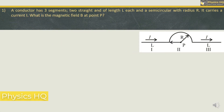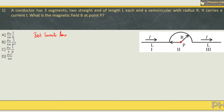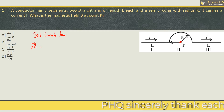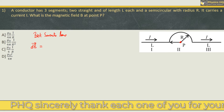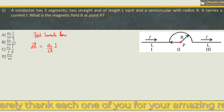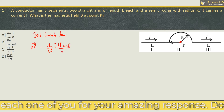A conductor has 3 segments — 2 straight of length L each and a semi-circular with radius R. It carries a current I. What is the magnetic field B at point P, shown at the center? To solve this, we will talk about Biot-Savart's law. It states that the incremental magnetic field at point P due to any current element IDL is given by mu0 upon 4pi times I DL sin theta upon R square.